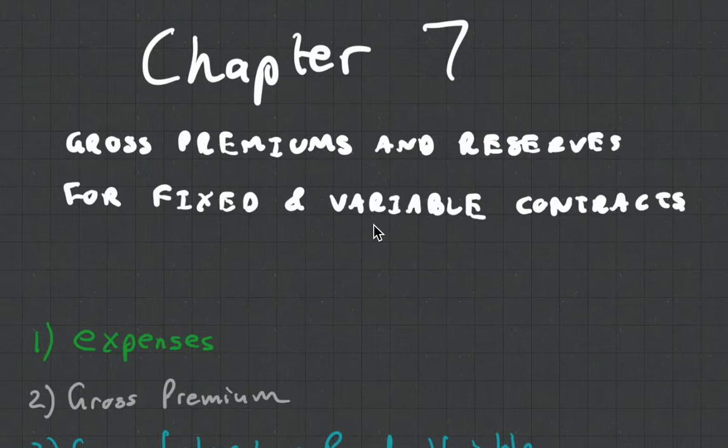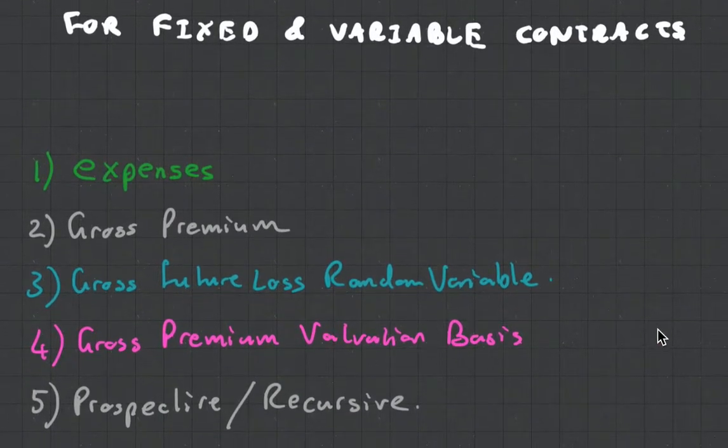And in this chapter, there's Expenses, Gross Premium, Gross Future Loss Random Variable, Gross Premium Valuation Basis, and Prospective and Recursive Formulas for Reserves.